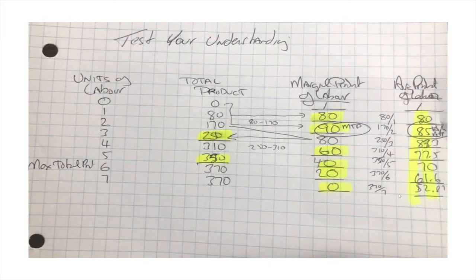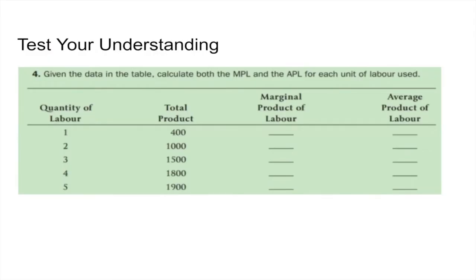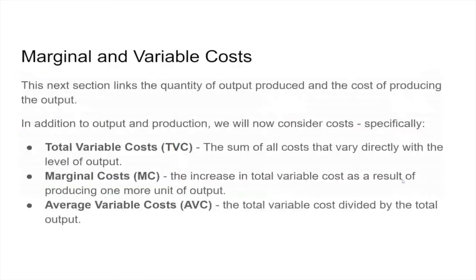In the second example with larger numbers, the marginal product of labor went from zero to 400 (marginal: 400), then 400 to 1,000 (marginal: 600), 1,000 to 1,500 (marginal: 500), 1,500 to 1,800 (marginal: 300), and 1,800 to 1,900 (marginal: 100). For average product we take total product divided by the number of workers: 400 divided by one is 400, 1,000 divided by two is 500, 1,500 divided by three is 500, 1,800 divided by four, 1,900 divided by five.